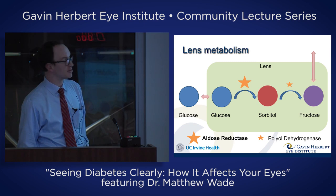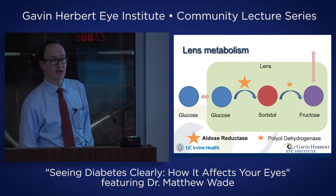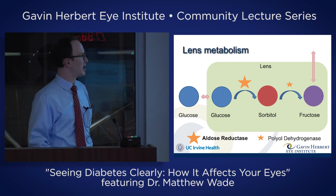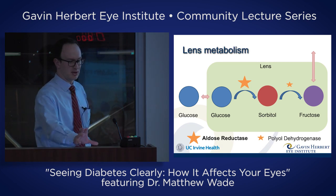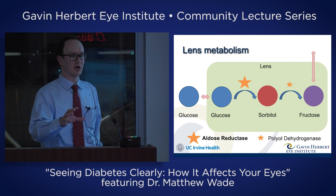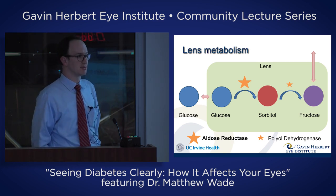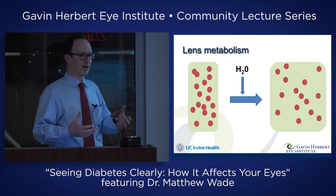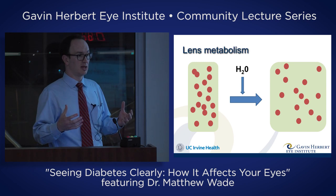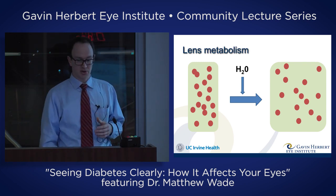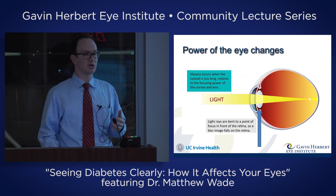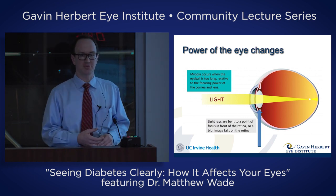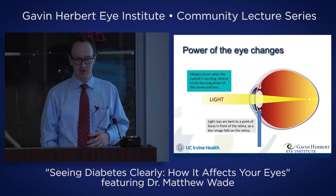Sorbitol can eventually be converted into fructose, which can leave the lens cells — but sorbitol itself cannot leave. When sugars are too high and this pathway becomes activated, we get a lot of sorbitol buildup, because glucose converts to sorbitol at a very rapid rate compared to sorbitol converting to fructose. All this sorbitol pulls in water, the lens cells swell, and the lens becomes bigger, giving you a higher lens power — a myopic or nearsighted shift.